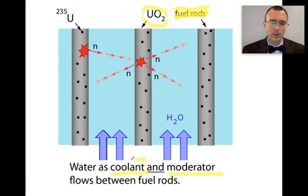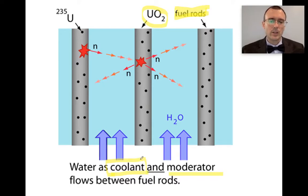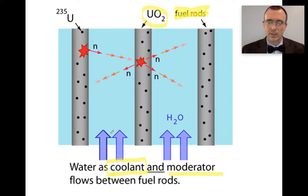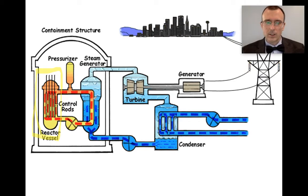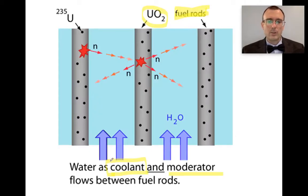The term coolant is kind of a misnomer — it's not really cooling down the reactor, it's used as a heat transfer agent. The water in the orange loop is used to remove heat from the uranium and move it over to the steam generator. So water is being used as a coolant in the sense that coolant means heat transfer agent — it's moving the heat into somewhere else in the power plant. Now, what about the term moderator?